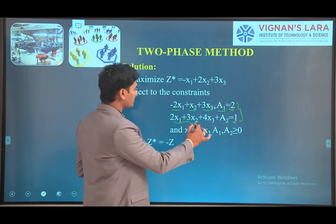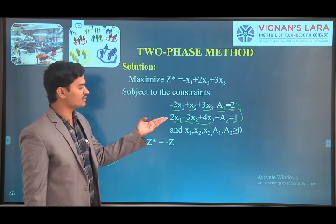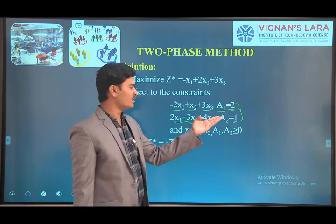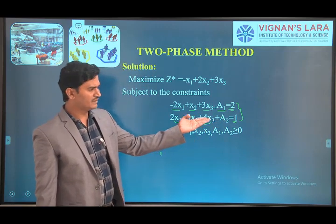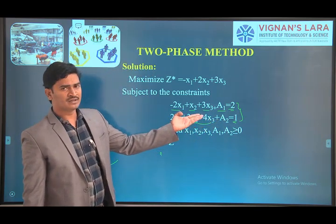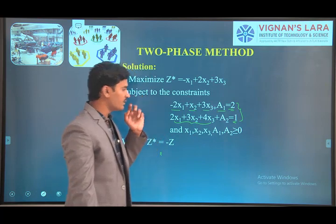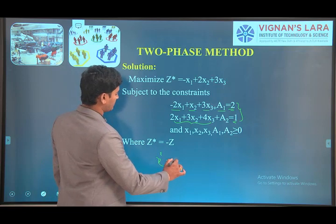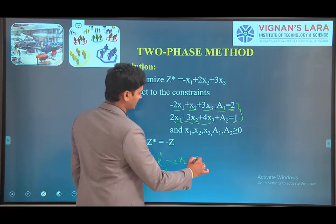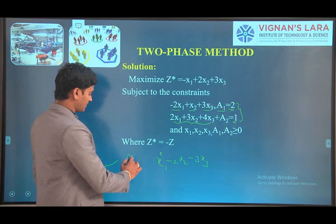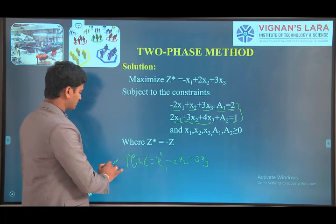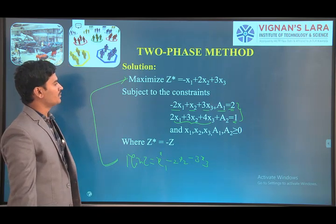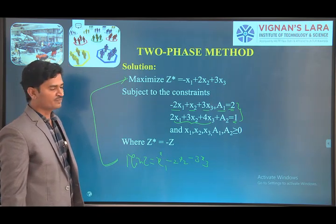The decision variables are all non-basic variables. That is why we take the artificial variables. Since this is an equality-type constraint, we take only artificial variables. The original objective function is minimize z = −x1 − 2x2 − 3x3. Since the function is minimization type, we convert it: maximize z = −x1 + 2x2 + 3x3.